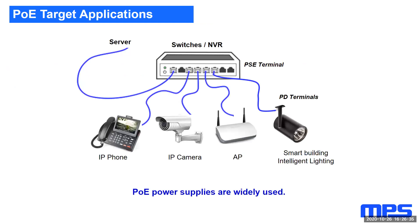For PoE, in places where power lines are not available, PoE systems are used to leverage a dual purpose to pass data and also power. Power devices such as IP phones, IP cameras, access points, routers, and lighting terminals are connected to power source equipment or PSE, which then connects to a server. This diagram is an illustration of a complete PoE network.